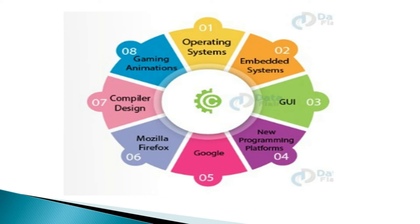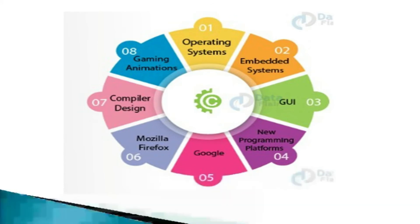First is the operating system — for example, the Unix operating system is developed in C language. Another application is GUI, Graphical User Interface. For example, Adobe Photoshop uses C programming language.